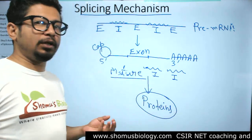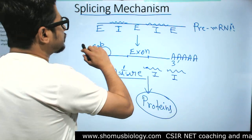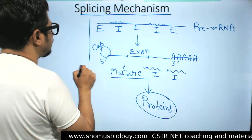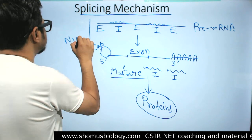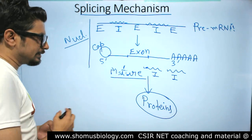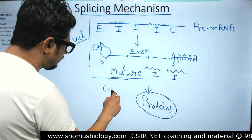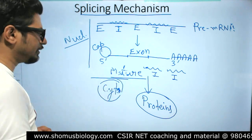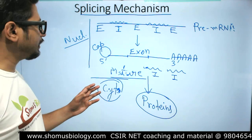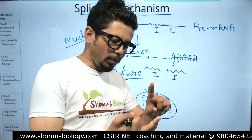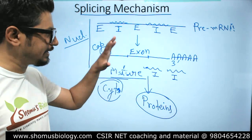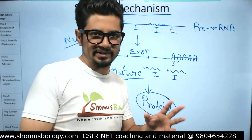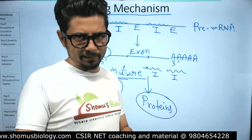The location of this splicing event, capping, and polyadenylation is the nucleus. The location of protein synthesis is the cytoplasm or cytosol. The splicing, polyadenylation, 5' capping — everything occurs inside the nucleus. RNA editing also takes place in the nucleus in many cases, though in some occasions it takes place in other places.